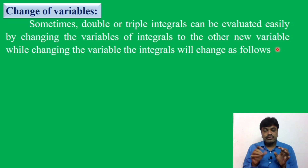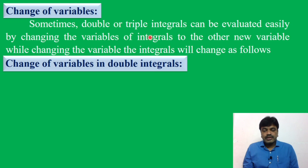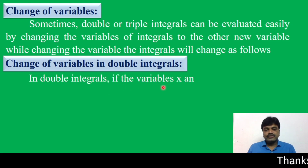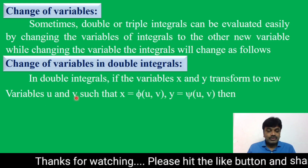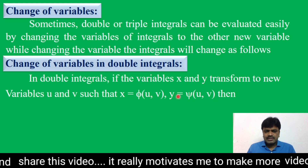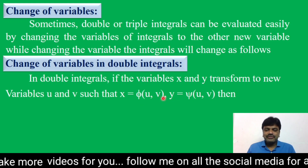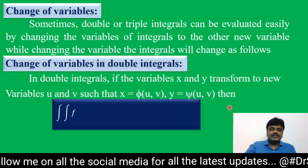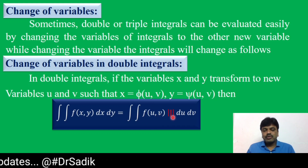Let us see the procedure for change of variables in double integrals. In a double integral, if the variables x and y transform to new variables u and v, such that x = φ(u, v) and y = ψ(u, v) — that is, x and y are functions of u and v — then the double integral ∬f(x, y) dx dy equals ∬f(u, v) |J| du dv.